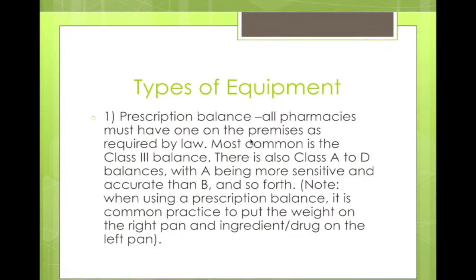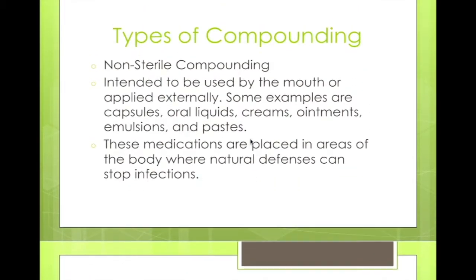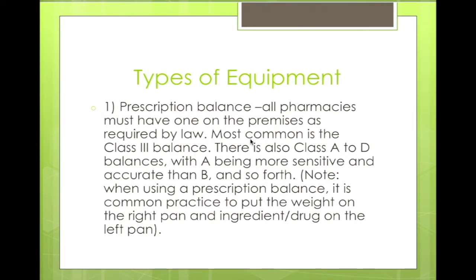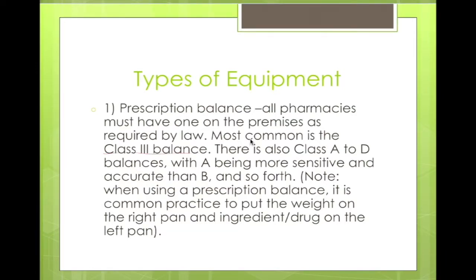The type of equipment for non-sterile compounding is a prescription balance. All pharmacies must have one of these on premises as required by law. The most common is the class three balance. There are also class A to D balances, with A being more sensitive and accurate than B, and so forth. When using a prescription balance, it is common practice to put the weight on the right pan and the ingredient or drug on the left pan.